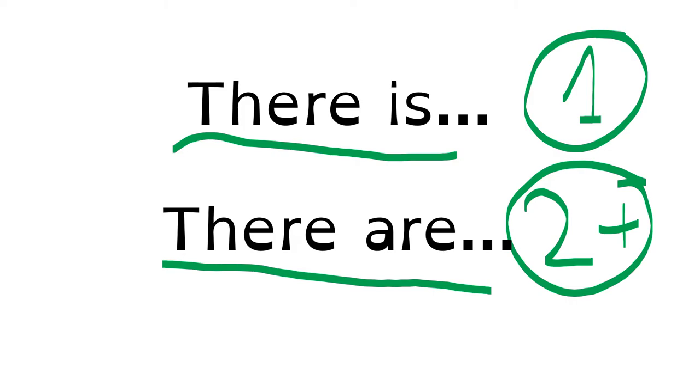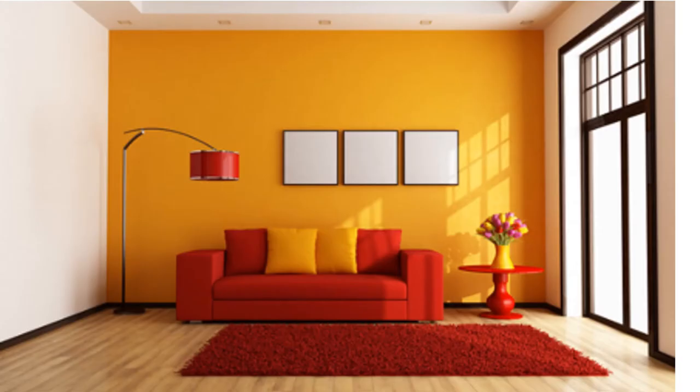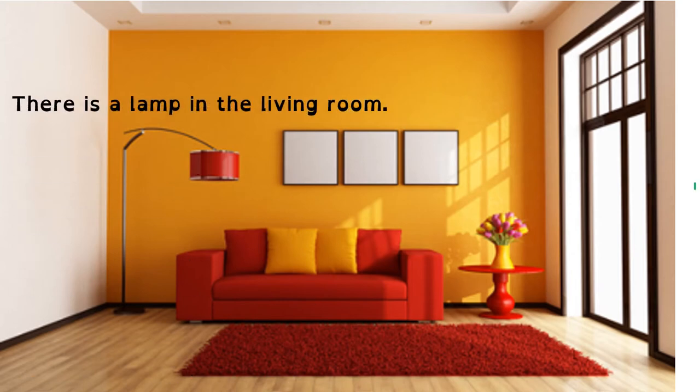Let's see some examples. Here we have a picture of a living room. Is there a lamp in the living room? Can you see a lamp? We can say there is a lamp in the living room. Can you see a sofa in the living room? Is there a sofa in the living room? There is a sofa in the living room.